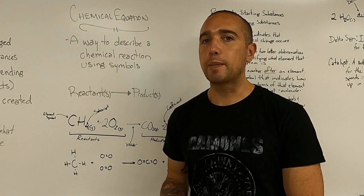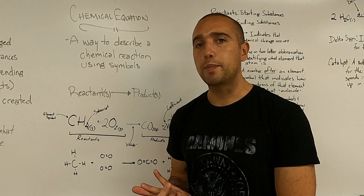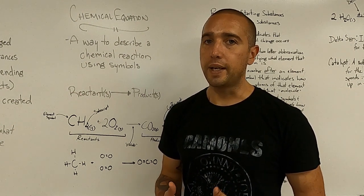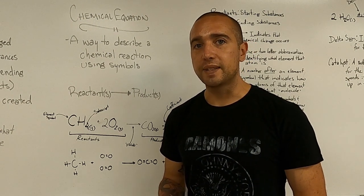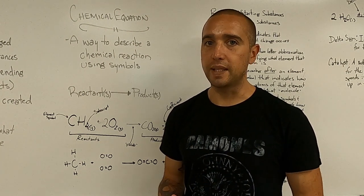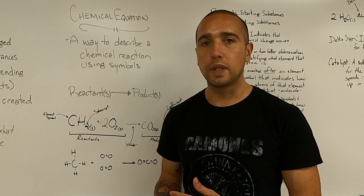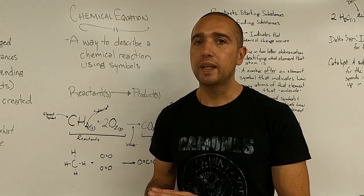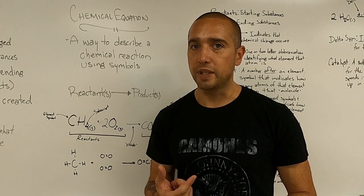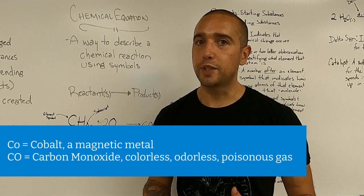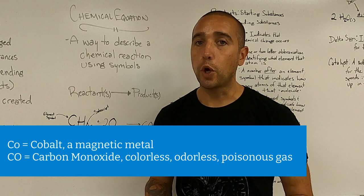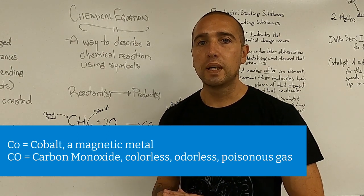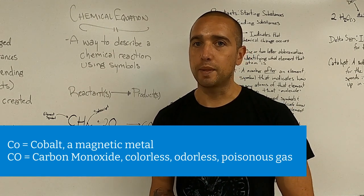If an element is represented by two letters, the first letter is capital and the second is lowercase. For instance, chlorine is capital C, lowercase l. A common mistake is reading it as capital C and capital I, but it is capital C and lowercase l. Iron is capital F, lowercase e. It matters especially with something like cobalt — capital C, lowercase o. If you wrote capital C, capital O, that means carbon and oxygen, which is carbon monoxide — a colorless, odorless, toxic gas. Cobalt, capital C lowercase o, is a magnetic metal — very different. Use your capitals and lowercase letters correctly.